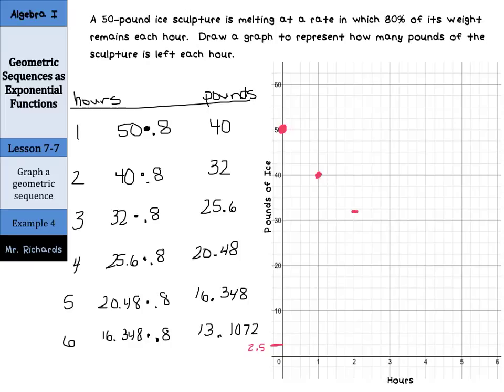Hour three, we'll have 25.6, so that's right above the 25 there. Hour four, 20.48, so just above the 20. Hour five, 16.348, pretty much in between the 15 and 17.5, it's right here.